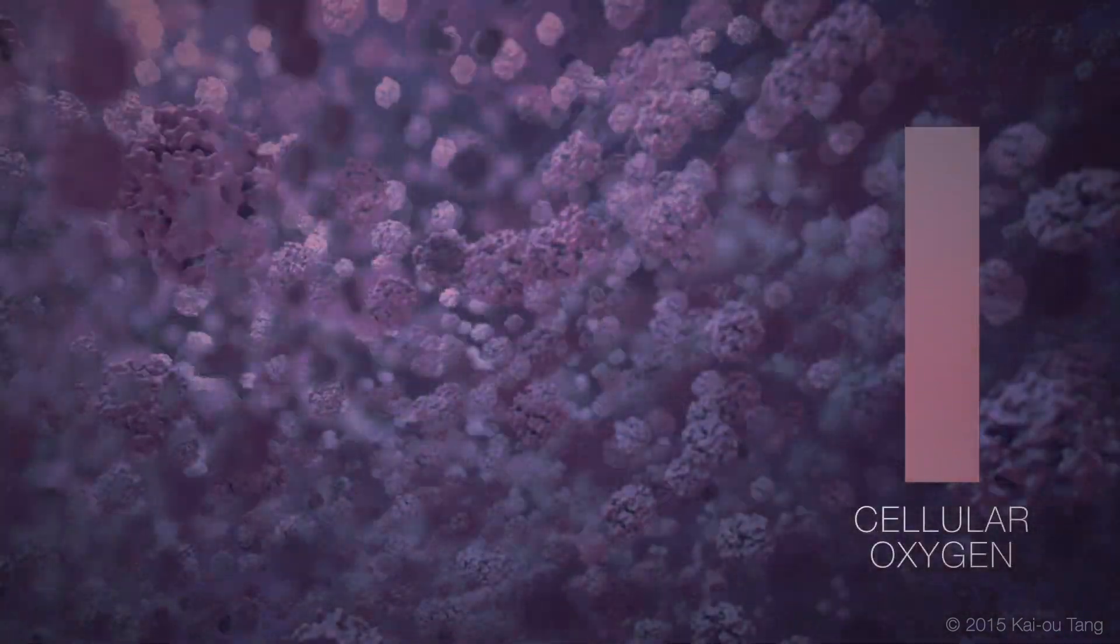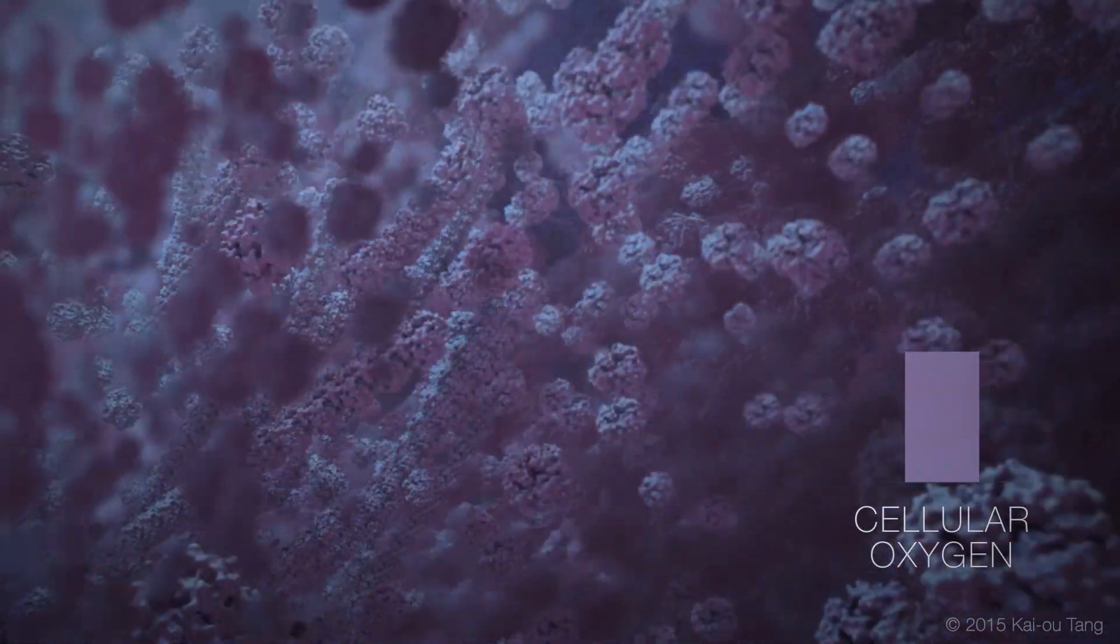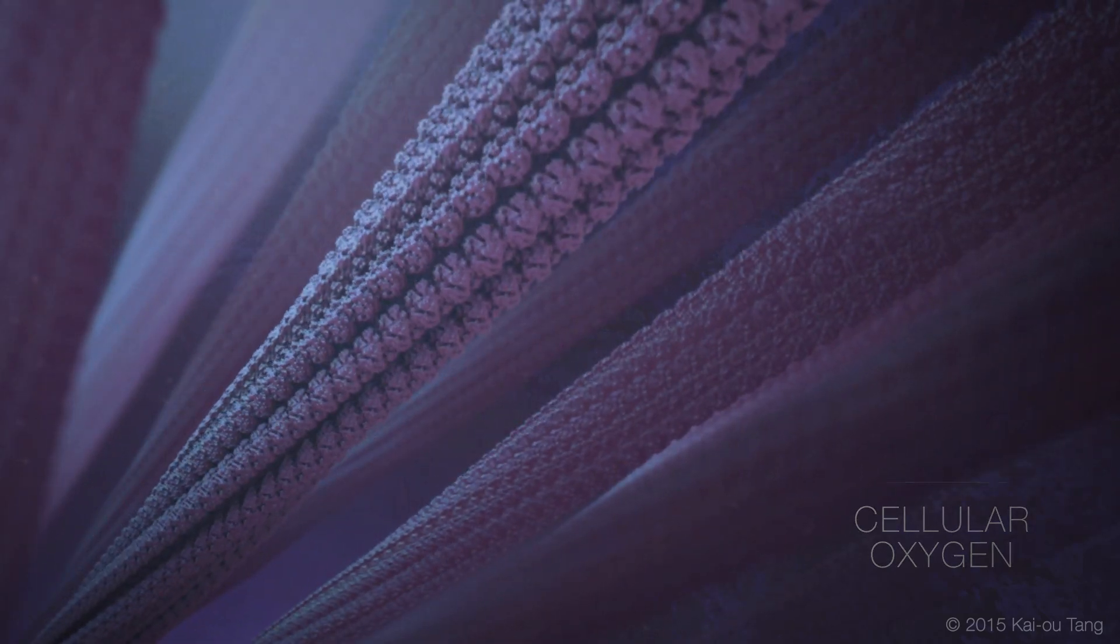When the erythrocyte encounters hypoxic conditions, Hemoglobin S polymerizes and changes from a globular tertiary structure to fibrous filaments.